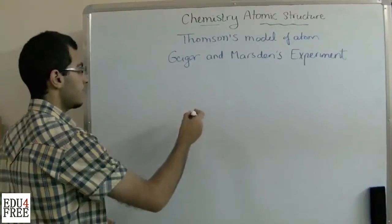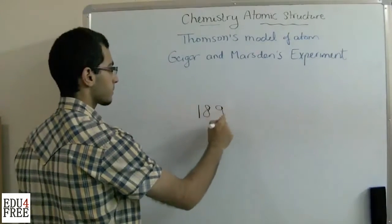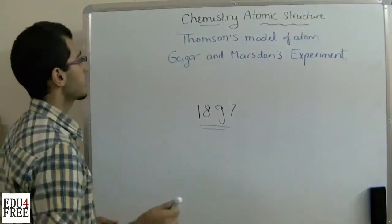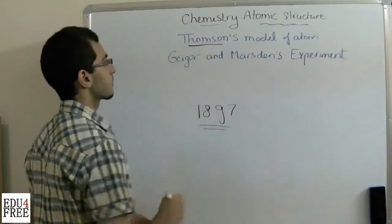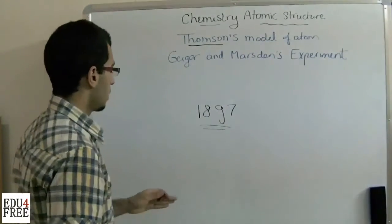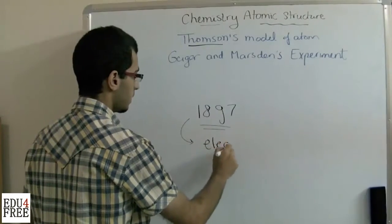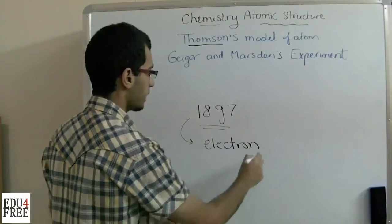In the year 1897, a scientist called Thomson made a model of the atom. His contribution is that he put the presence of electrons in his model.